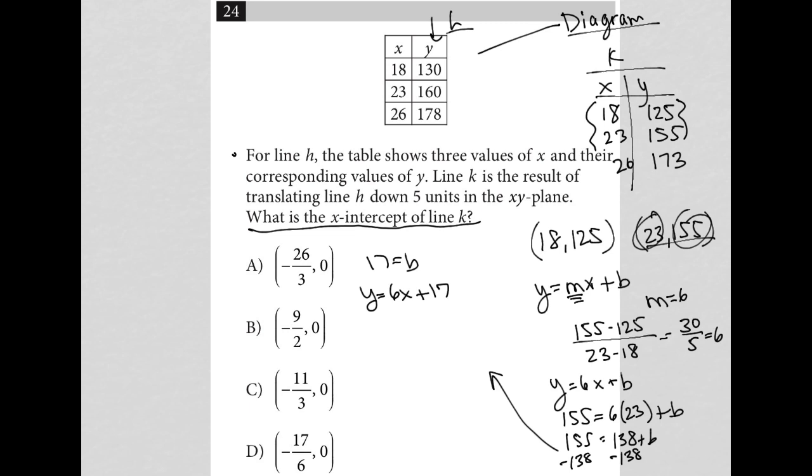Now, to find the X intercept, I need to make Y equal to 0, so I'm going to replace Y with 0. So 0 equals 6X plus 17. I'm going to subtract 17 from both sides.